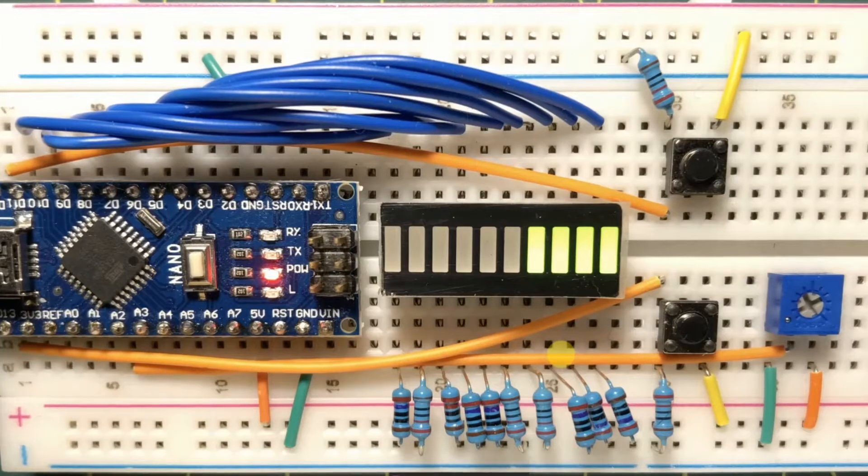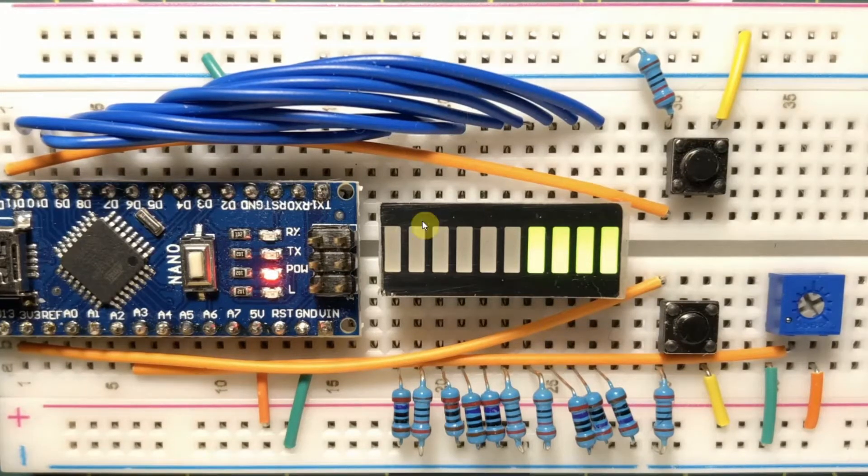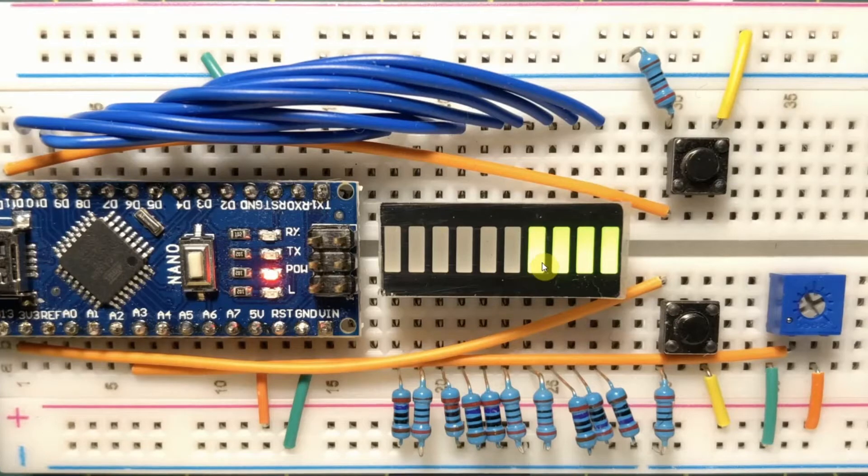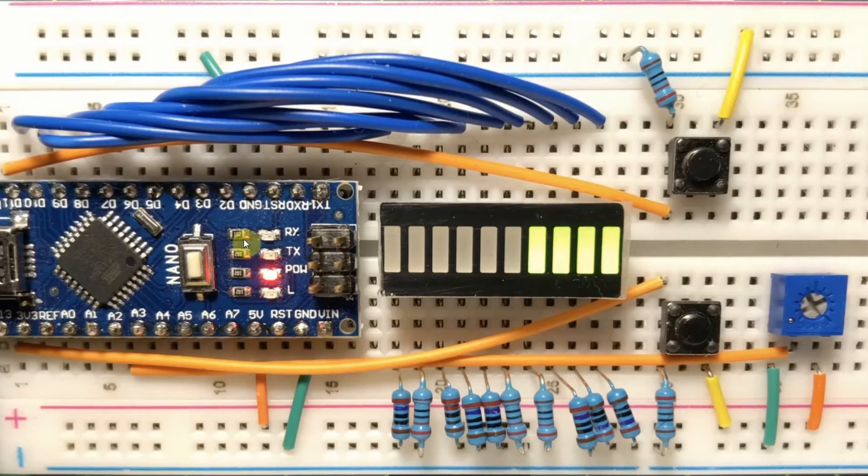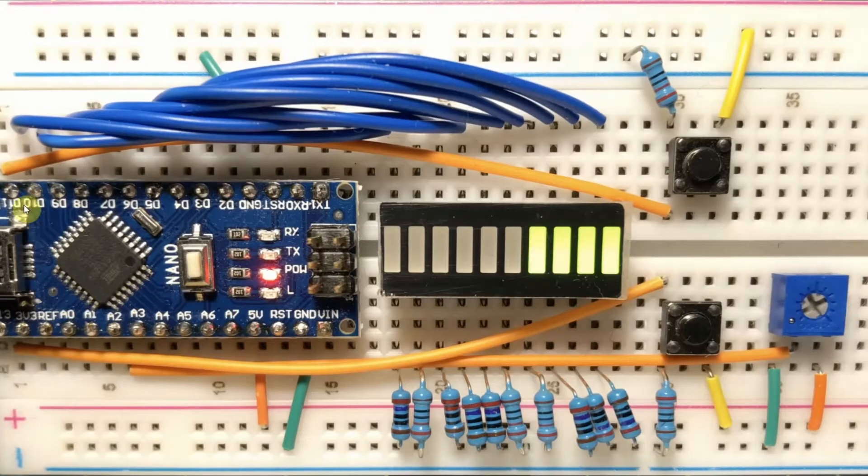Let's have a look at the components used in this project. Here we have a 10-bit bar graph display interfaced to an Arduino Nano through the digital pins 2 to 11.